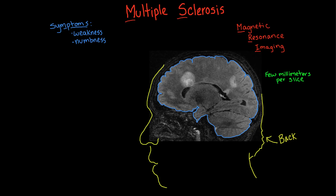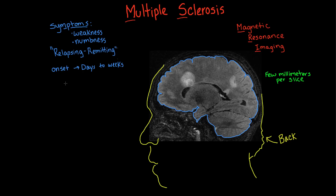What would be a normal time course for MS symptoms? There are different forms of MS, but the most common is called relapsing-remitting, where patients have attacks of symptoms that often come on over a few days or a week or two, and those will often last a few weeks to a few months. They'll often see improvement after one of these attacks — sometimes complete recovery back to 100%, but often not quite back to 100%, leaving a little bit of residual abnormality.